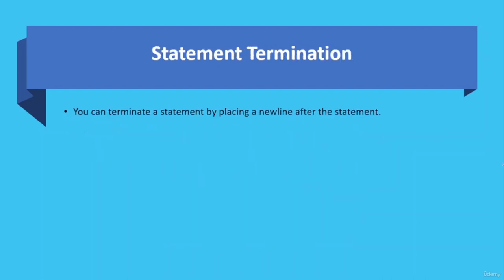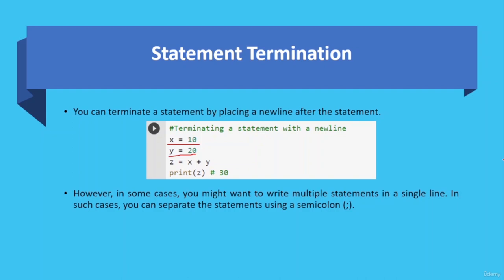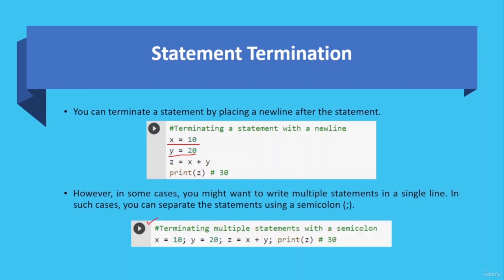You can terminate a statement by placing a new line after it, and the next statement starts on the new line. However, in some cases you might want to write multiple statements in a single line — you can separate statements using a semicolon. Here you can see the same code written in one line that was previously written in four lines: 'x = 10; y = 20;' and so on. The result is the same — the summation of x and y equals 30.